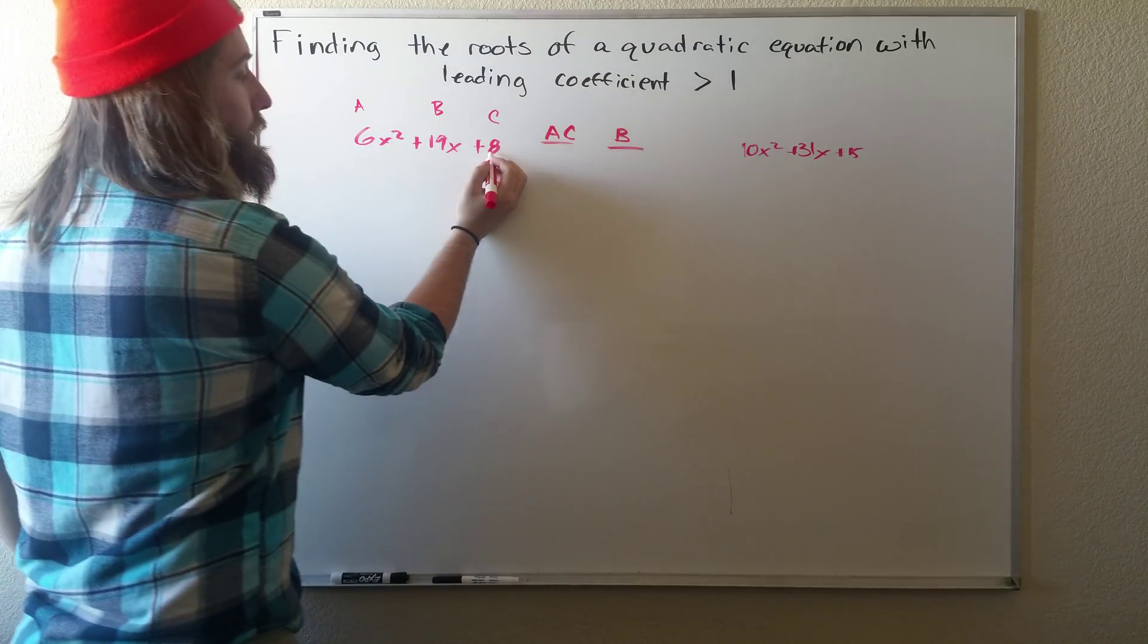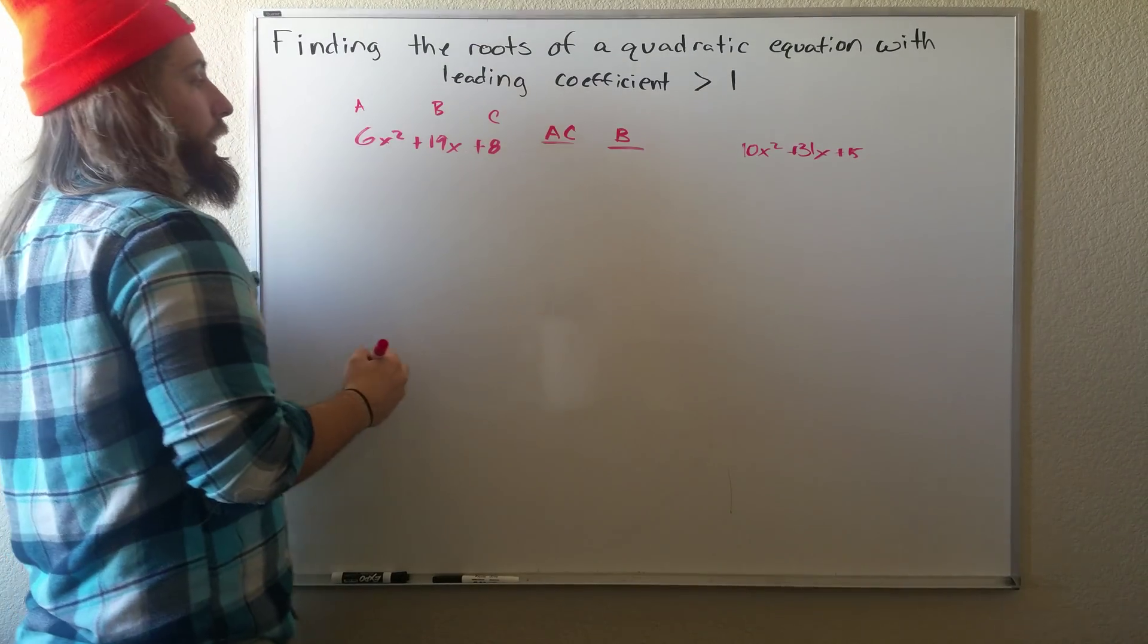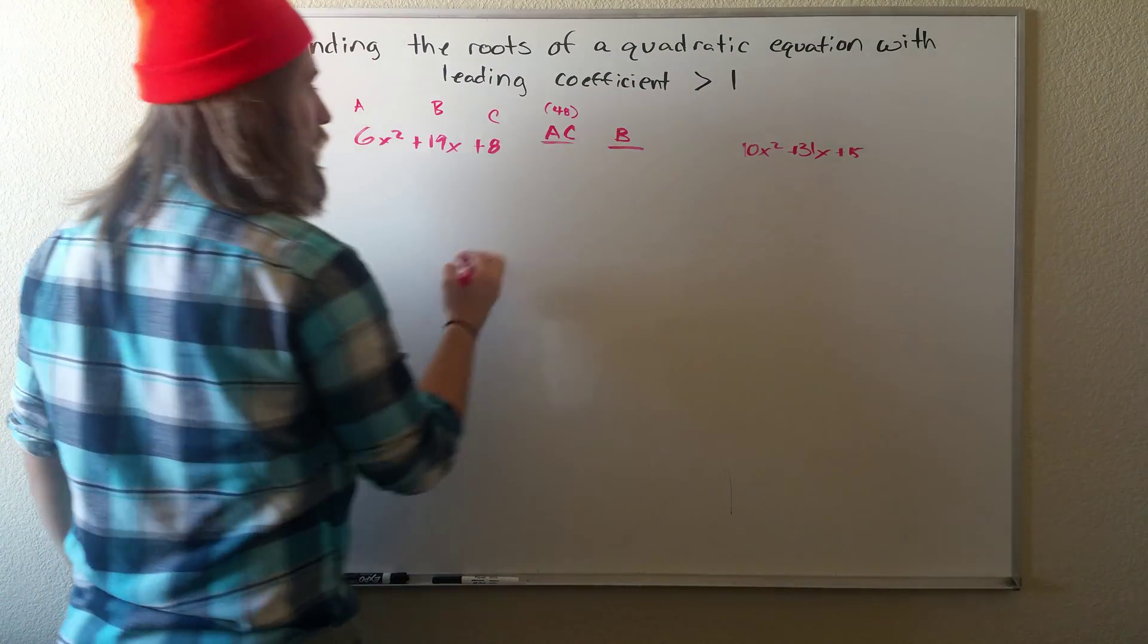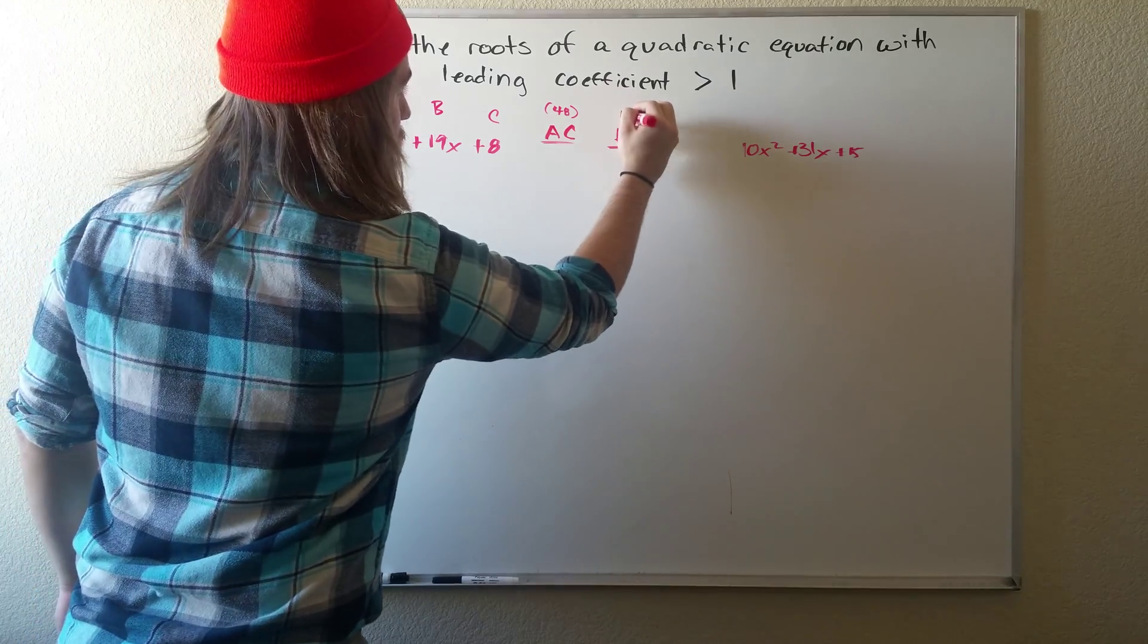So A times C is 6 times 8, which is 48. And then our B term is 19.